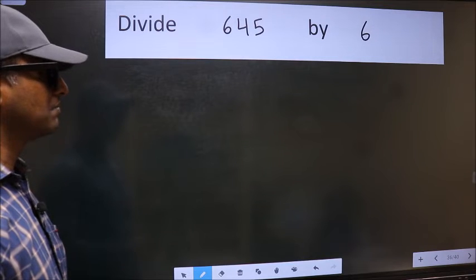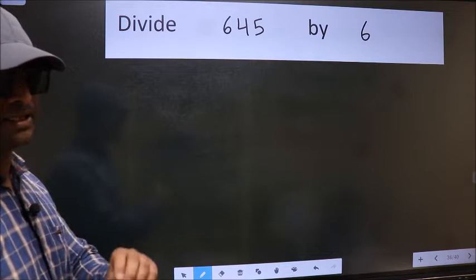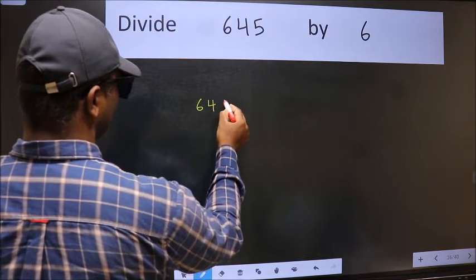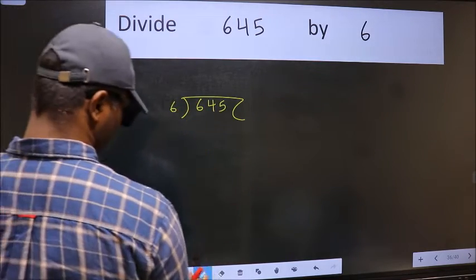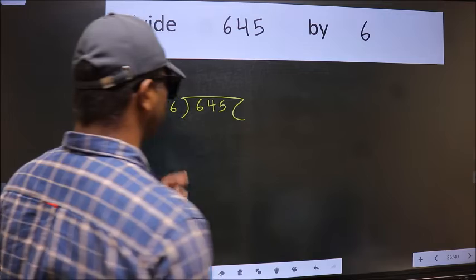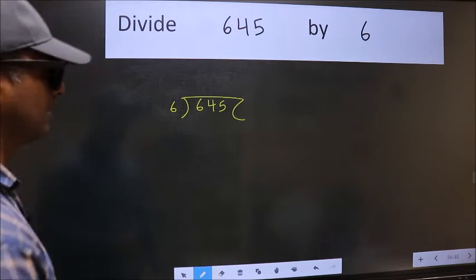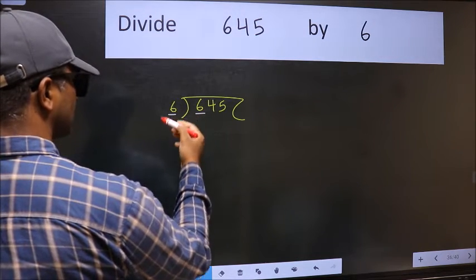To divide 645 by 6, we should frame it in this way: 645 here and 6 here. This is your step one. Next, here we have six and six. When do we get six in the six table?